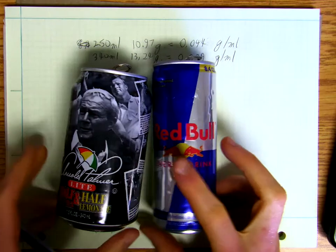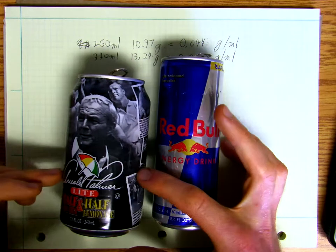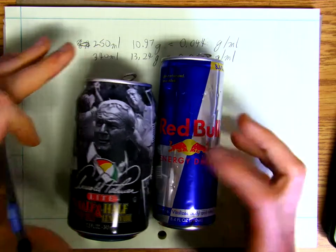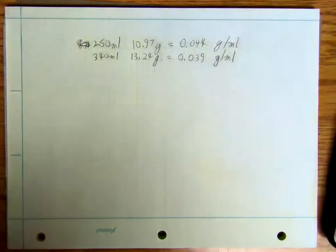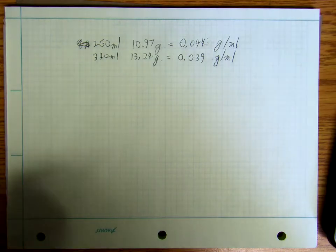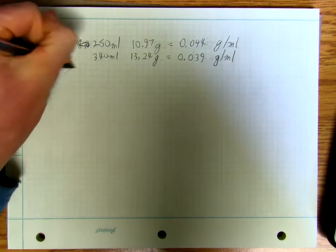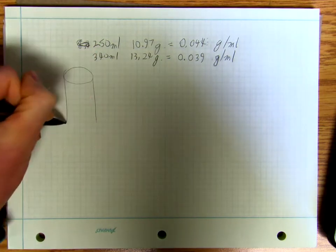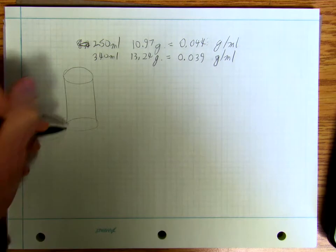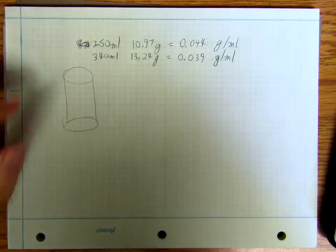You look at it, and this one is sort of wider but also shorter. So the question becomes: is there an ideal can size? Let's start thinking about that. We're going to simplify things and not worry about all the extra details — we're just going to call it a cylinder.